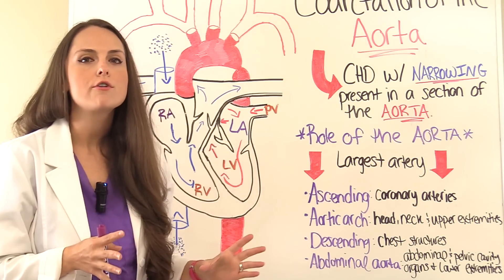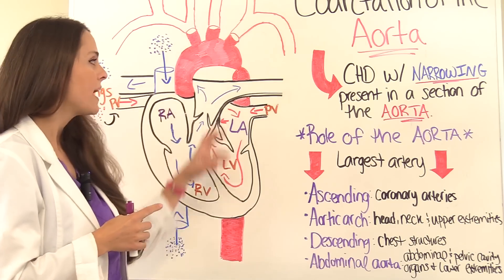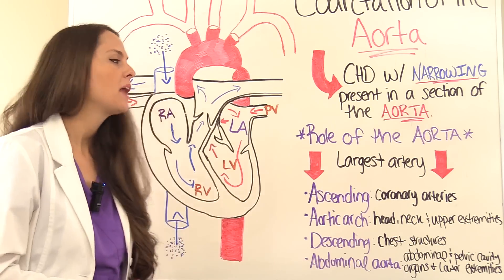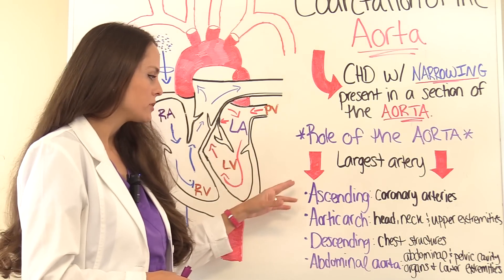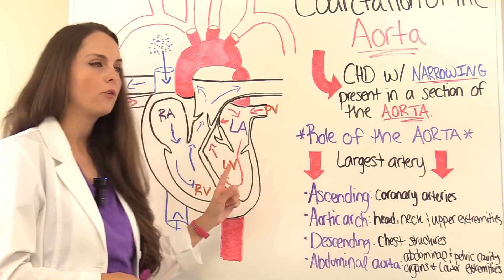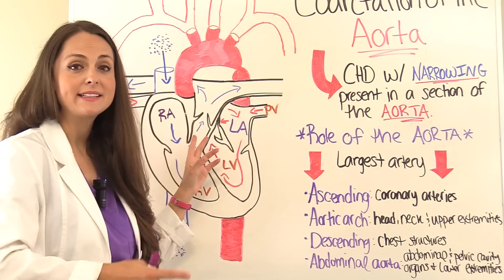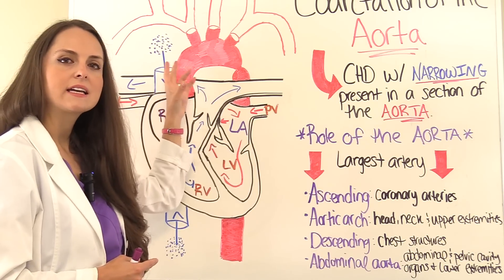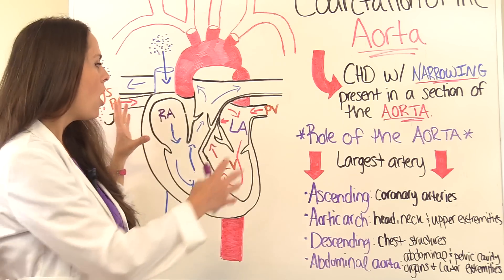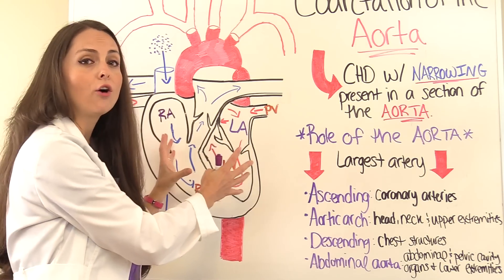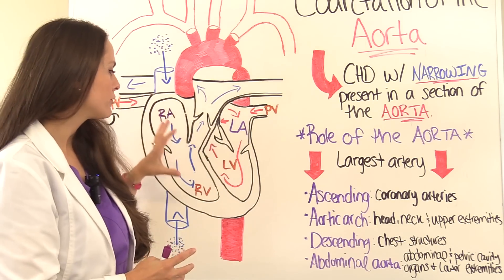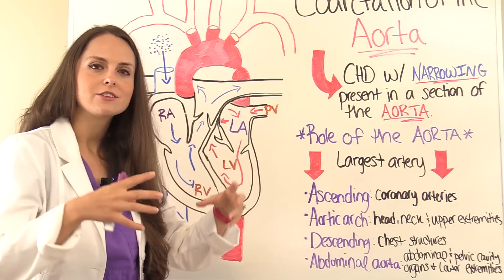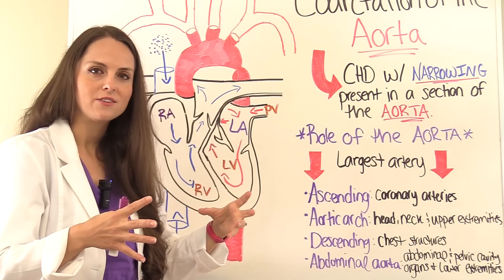Let's go over the various sections of the aorta and what areas of the body each feeds. The first is the ascending aorta — just like the name, it's the part going up. It branches off into the coronary arteries, which sit on top of the heart muscle and deliver fresh oxygenated blood to it. If blood supply becomes decreased or blocked, that heart muscle will die.